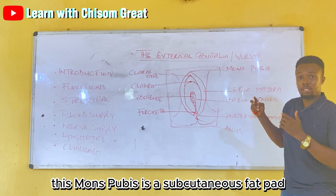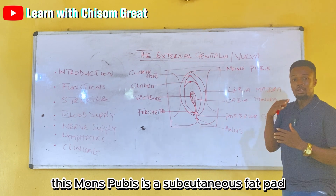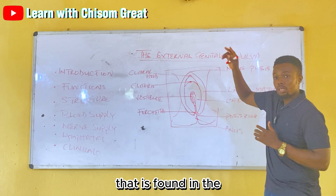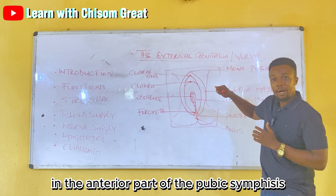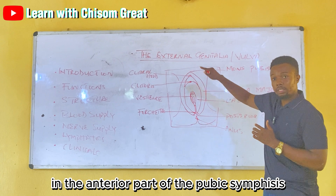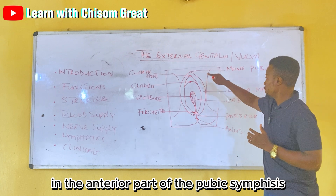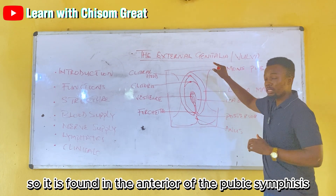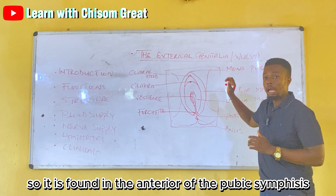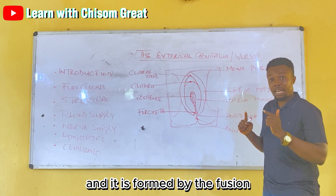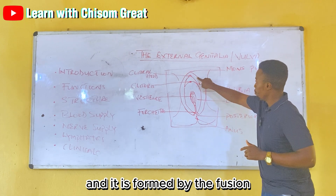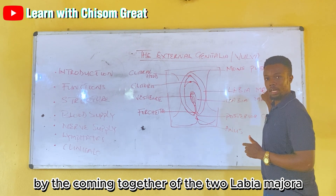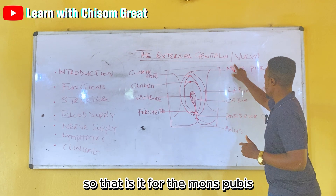The mons pubis is a subcutaneous fat pad found in the anterior part of the pubic symphysis. It is formed by the fusion — the coming together — of the two labia majora.